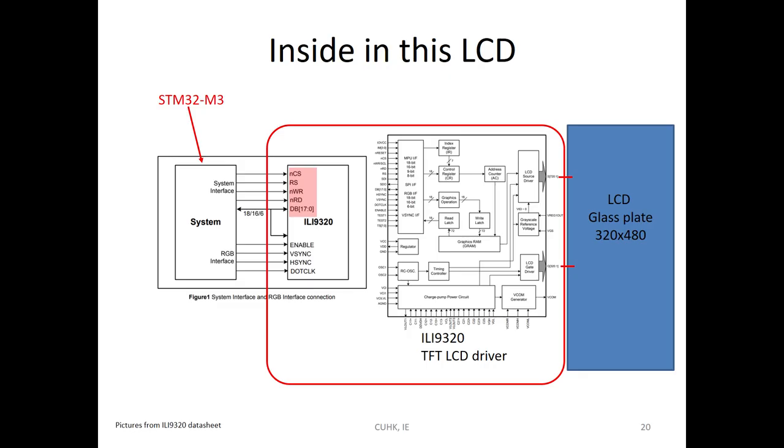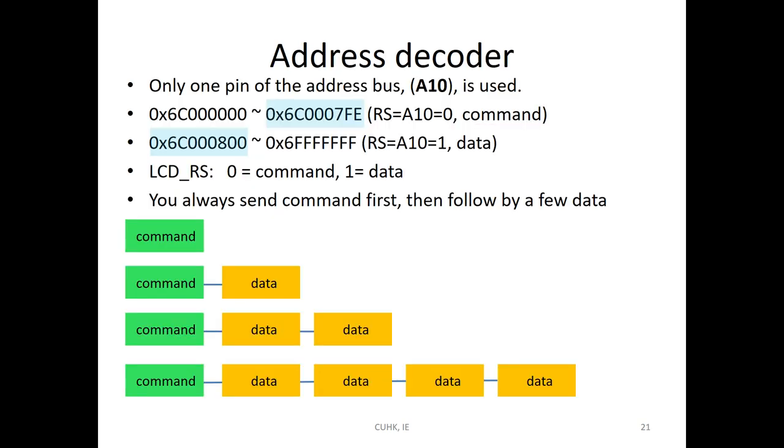Our CPU STM32 talks to the LCD module. Actually, your CPU talks to these chips. And this chip controls the LCD matrix. How to communicate? You may send command only, and send command plus one data, command plus two data, or command plus four data to the LCD. How to define the command data? Use A10. When A10 equal to zero means command. A10 equal to one means data. So when A10 equal to zero actually covers this range address. If A10 equal to one, the range is from 0x6000 0800 to 0x6000 08FF. So 64 megabyte, actually we only use a few bytes.